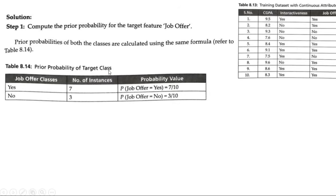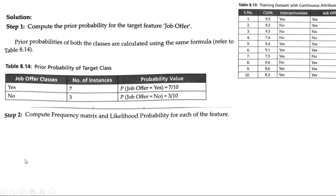The prior probabilities of both classes are calculated using the table. Write down the job offer classes — yes or no — as the first column, and the number of instances as the second column. The number of instances where job offer is yes is 7, and job offer is no is 3. So probability that job offer is yes equals 7 by 10, and probability of job offer no is 3 by 10, where 10 is the total number of instances.